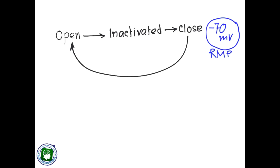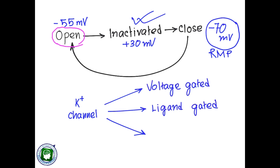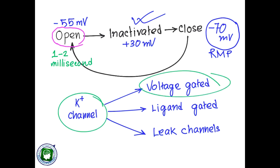As soon as there is a little change in membrane potential from minus 70 to just minus 55, this voltage-gated sodium channel opens. Due to the entry of a lot of sodium, the inside becomes more positive and the membrane potential changes to plus 30 millivolt, by which time the channel becomes inactivated. For potassium channels, there are also three types: voltage-gated, ligand-gated, and leak channels. Voltage-gated sodium channels open for a very short period — around one to two milliseconds — whereas voltage-gated potassium channels remain open for a longer period, so they are slow to act.